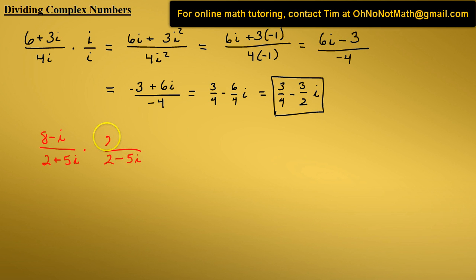We're going to multiply the numerator by that as well. We have 2 minus 5i over 2 minus 5i. That just equals 1, so multiplying this fraction by 1 doesn't change the value. Now let's multiply.